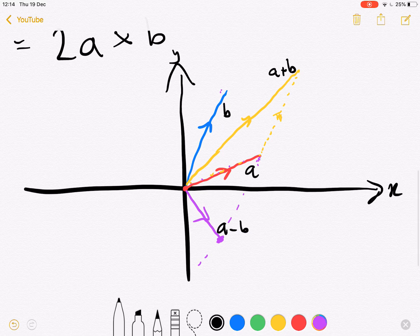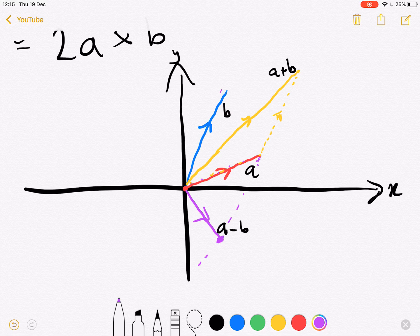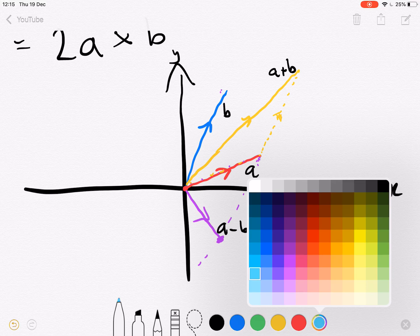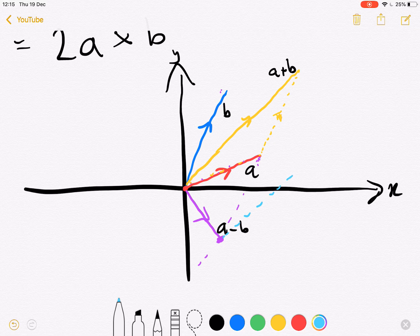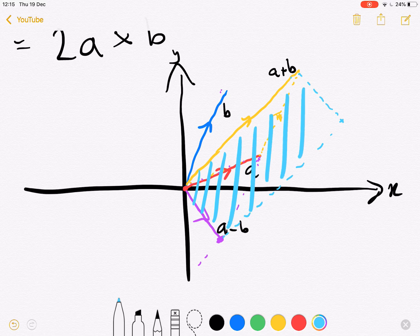Now if we conduct the cross product, which is the area of a parallelogram of a - b and a + b, let's see what we get. We just convert it into a parallelogram. Let me choose this color. So we make a parallelogram from a + b vector and a - b vector. So this is (a - b) × (a + b).